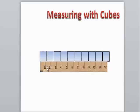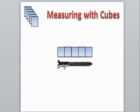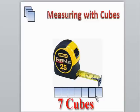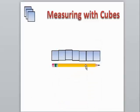Now let's review. The ruler measured 10 cubes. The screw measured 5 cubes. The tape measure measured 7 cubes. And finally, the pencil measured 7 cubes as well.